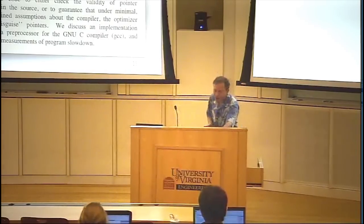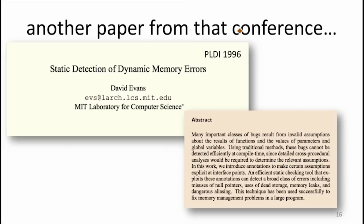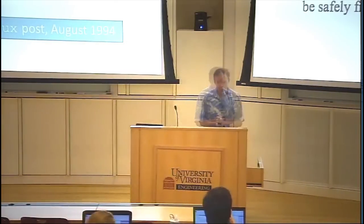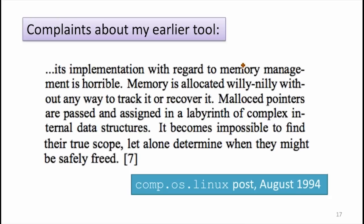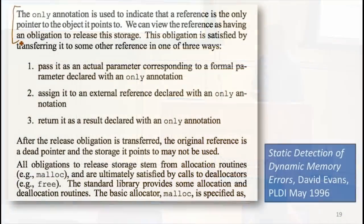I want to jump ahead to mention another paper from a conference in 1996 — actually my second paper, but quite relevant to what we're talking about today. This paper followed from a previous paper where I made a program analysis tool, and someone tried to modify it and wrote comments on a mailing list about how horrible the memory management in my implementation was — allocating memory in a willy-nilly way. I was a pretty inexperienced C programmer. So we needed a better solution: going from willy-nilly memory management to something systematic — still writing C code with explicit deallocation, but done systematically using annotations to track rules about how references could be used.